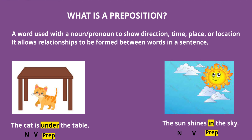Let's take a look at the first picture. What do you see? You see a cat and a table. Where is the cat? The cat is under the table. So 'under' will be the preposition. What is the noun in the sentence? Cat is the noun. So what is 'under' doing here? It is telling us where the cat is — it is under the table.